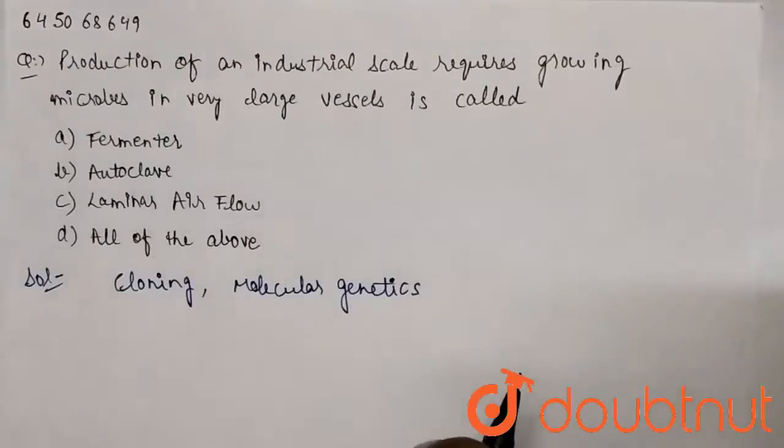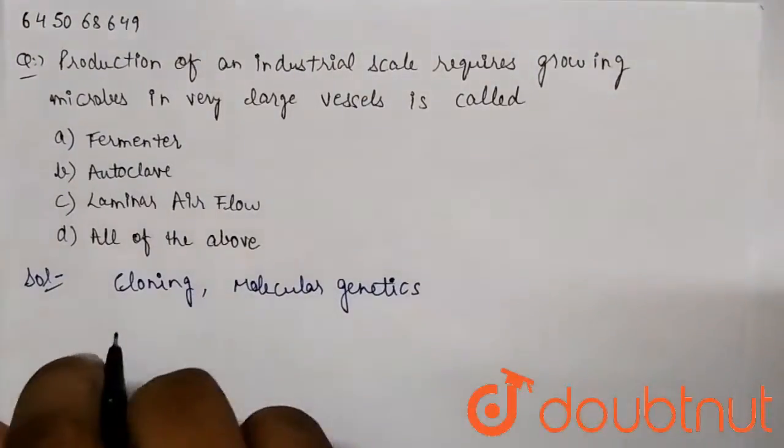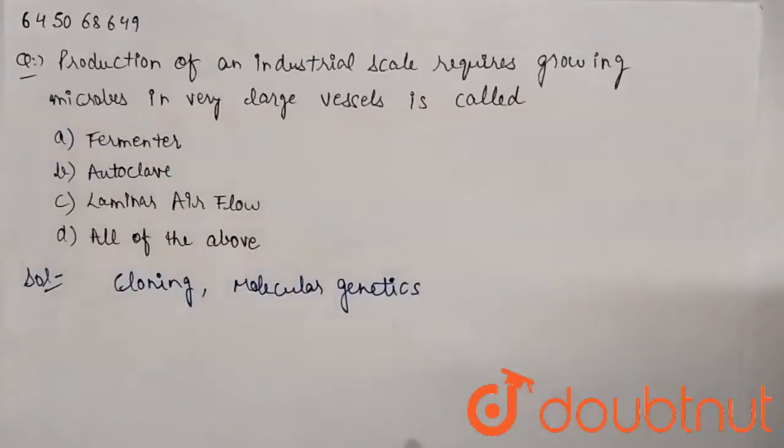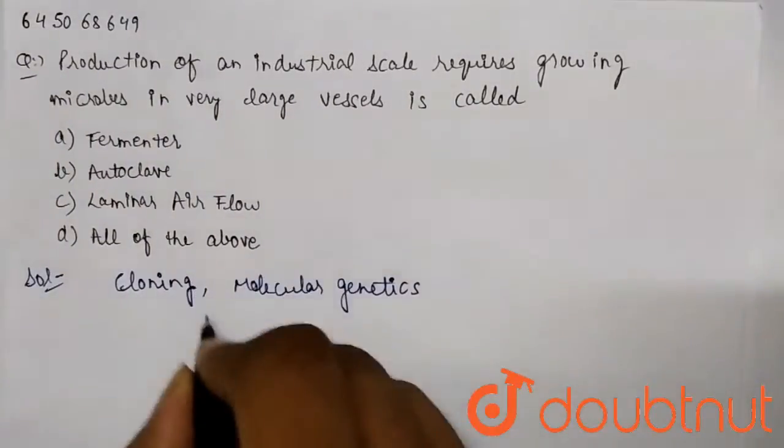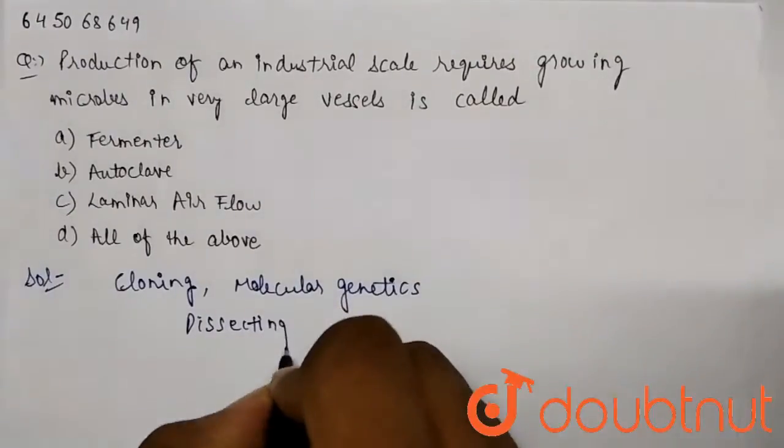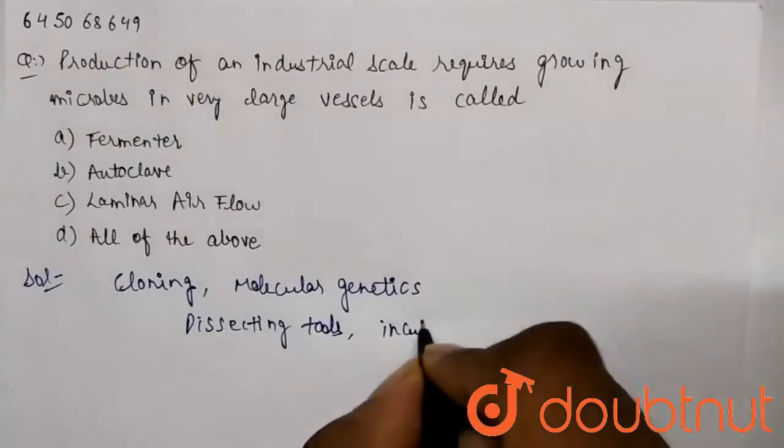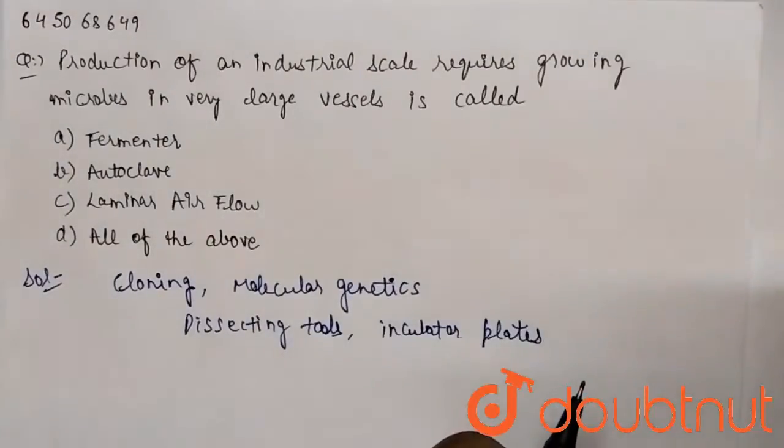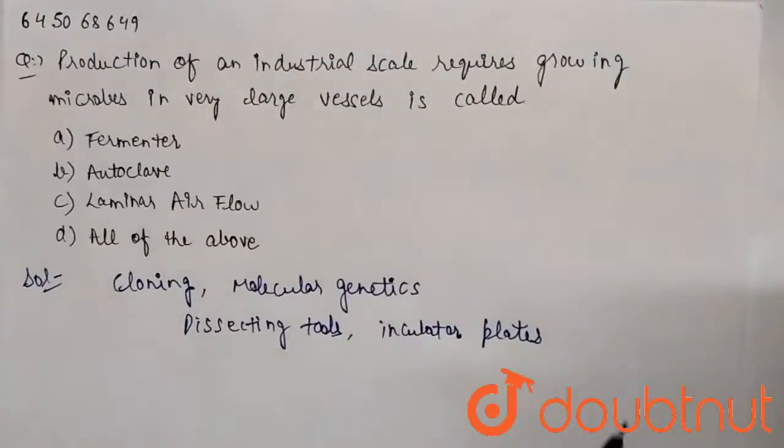First is fermenter - I will come to fermenter later. Autoclave is basically a type of process used in daily biology where basically our biological tools such as dissecting tools or incubator plates, even our cultures - what we do is that these things we have to sterilize. We have to avoid any possible contamination. So what we do is that we place them in very optimum high temperature. It's such a temperature where the microbes, if it is there, they will be killed. That process is called autoclave.